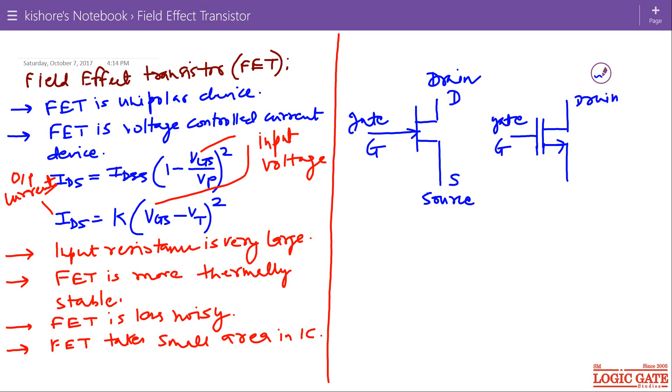This is drain for MOSFET and here we have source. So source is the terminal through which majority charge carrier enter the semiconductor bar and drain is the terminal through which majority charge carrier leave the bar. Gate is the voltage control terminal through which we can apply the biasing voltage and we can control the current flowing from drain to source.